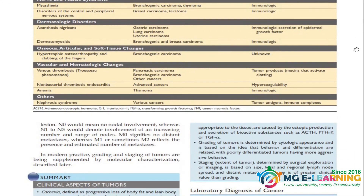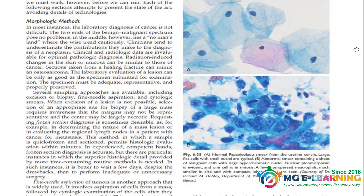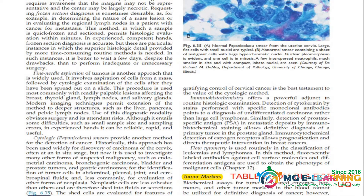इसके बाद summary कर लें। Laboratory diagnosis of cancer को skip कर दें, यह नहीं करना। Tumor markers बहुत important है — इसका UQ भी आता है। Tumor markers की table medium Robbins में नहीं है, वो table आपको big Robbins में मिलेगी।